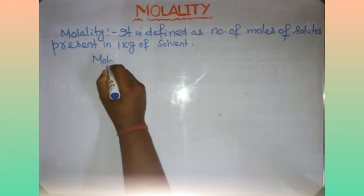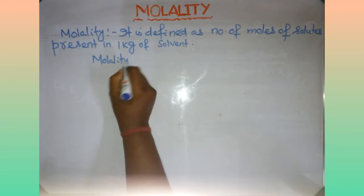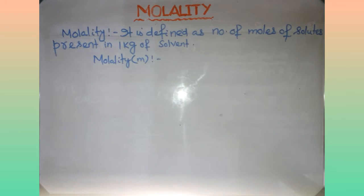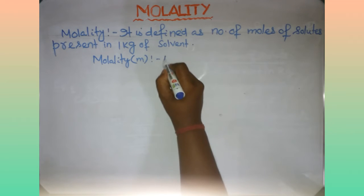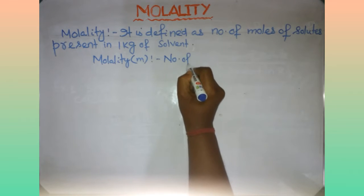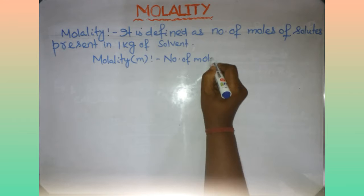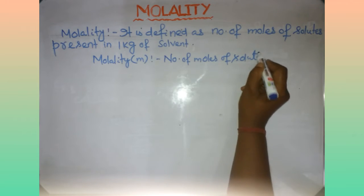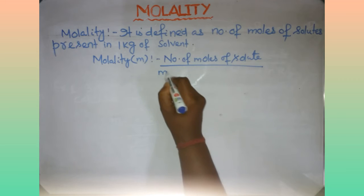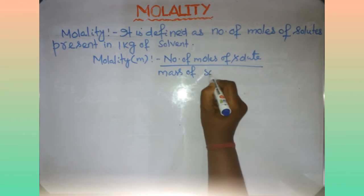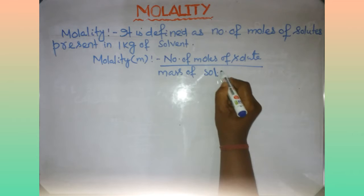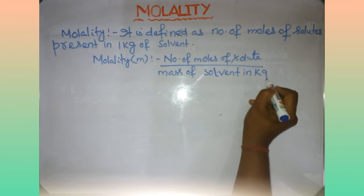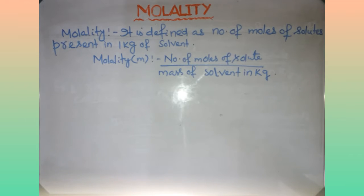Molality is denoted by the letter M. Molality will be the number of moles of solute upon the mass of solvent in kg. This is the expression for molality.